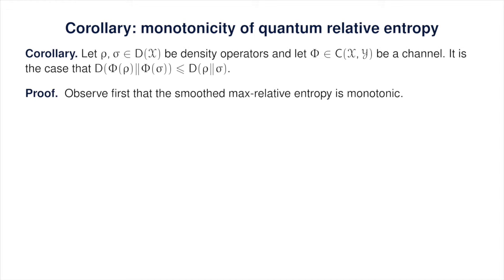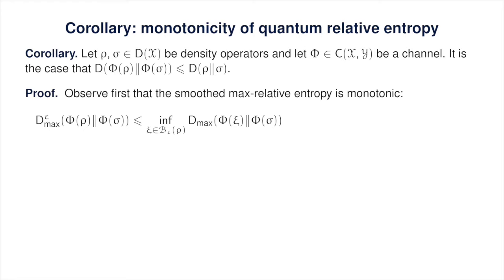Let's see how this corollary is obtained from the main theorem. First, observe that the smoothed max relative entropy is monotonic with respect to the action of channels. That's not surprising given that the non-smoothed max relative entropy has this property, but we need to verify that smoothing doesn't change this. If we start with the smoothed max relative entropy of phi of rho with respect to phi of sigma, this is at most the infimum over all states xi that are epsilon close to rho of the max relative entropy of phi of xi with respect to phi of sigma, because phi of xi must be epsilon close to phi of rho. So we're taking the infimum over a subset, meaning the infimum can't get any smaller.